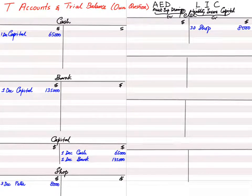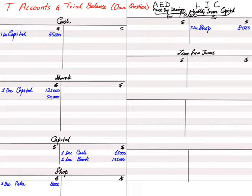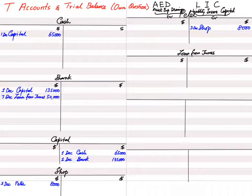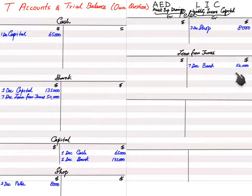Transaction 3: we received a loan of $50,000 from James by cheque. Whenever money is received, the bank account increases — it is debited. Loan from James is a liability, and a liability increases when credited. So the entry is: debit bank account with reference 'loan from James,' and credit the loan from James account with reference 'bank.'